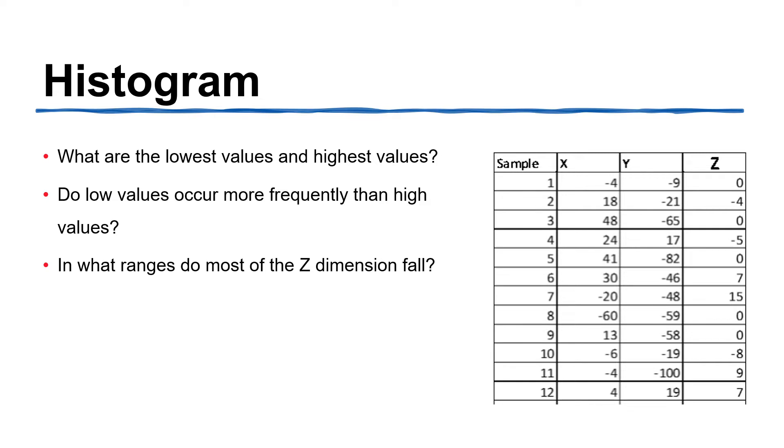In other words, what does the distribution of the dimension look like? These questions are about numeric data. Earlier in this chapter, we talked about how we can use bar charts to display categorical data. Now we'll look at a similar chart that is specially designed to display numeric data: the histogram.